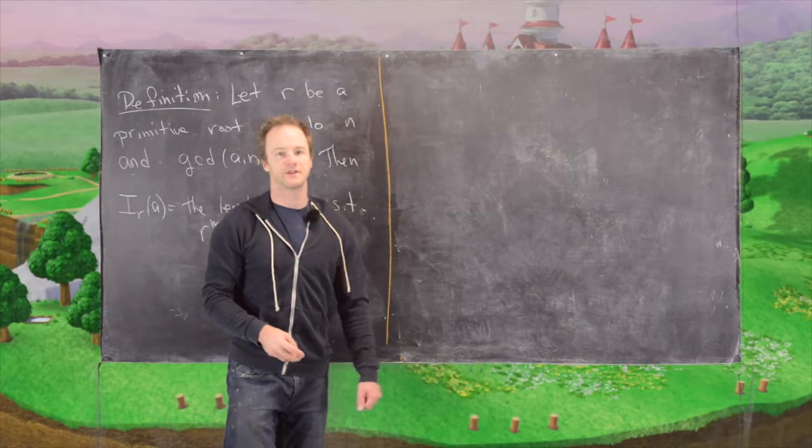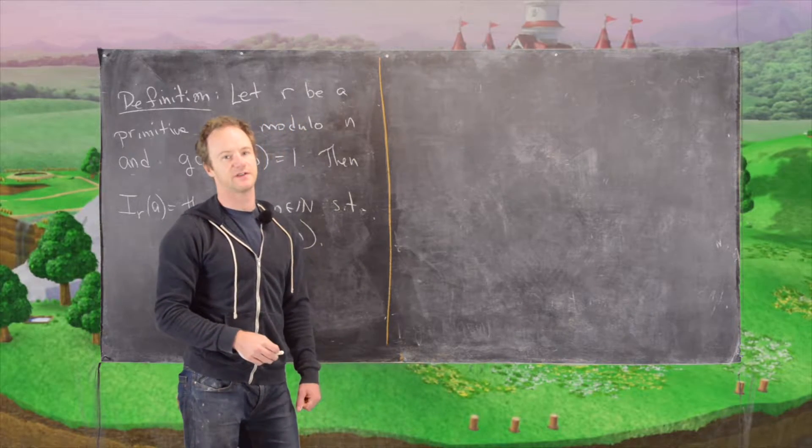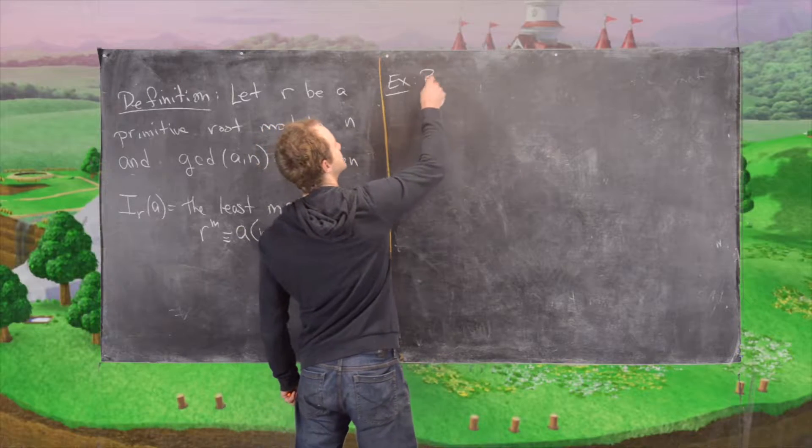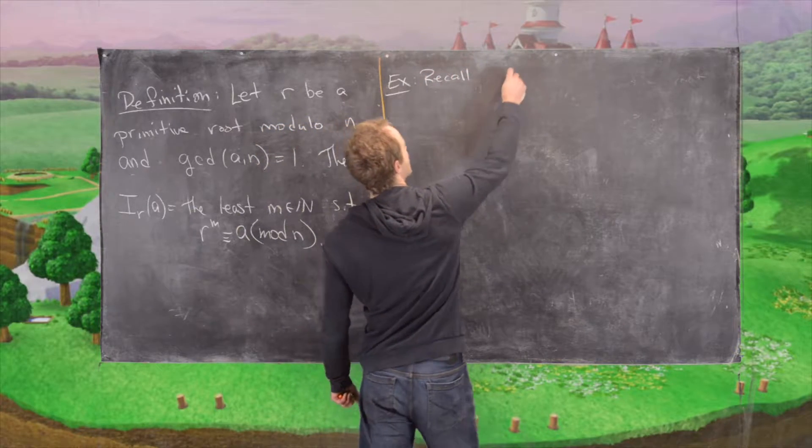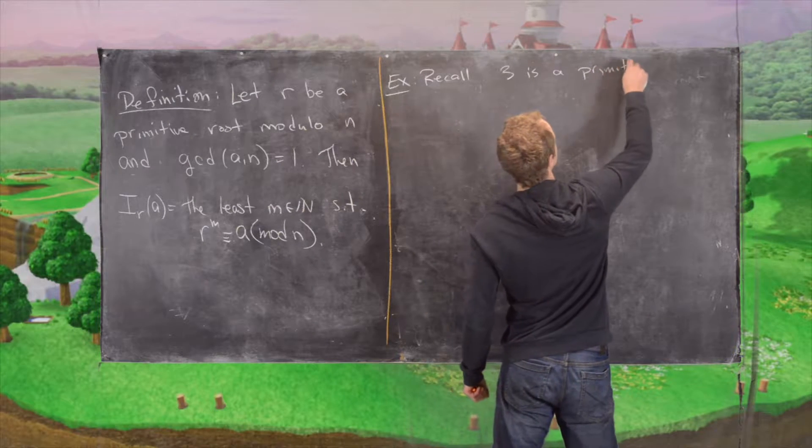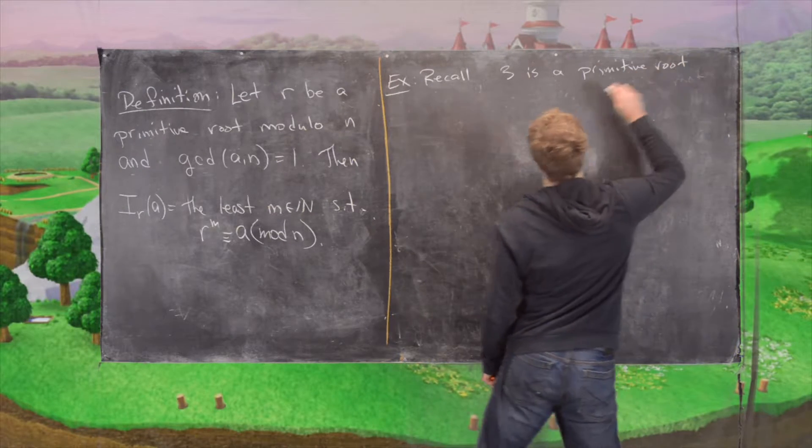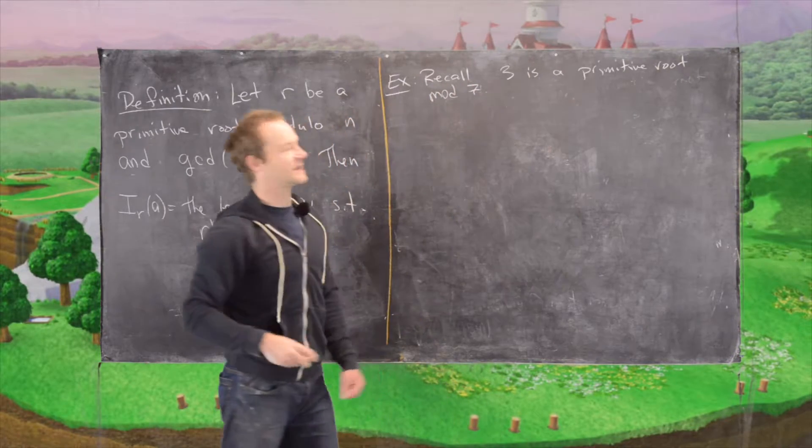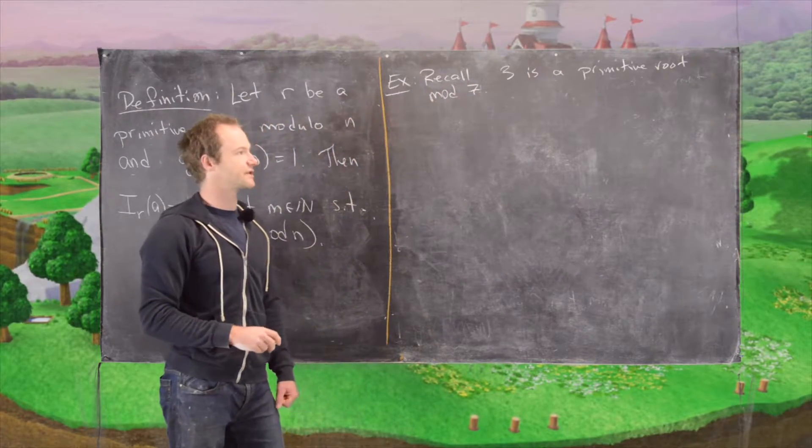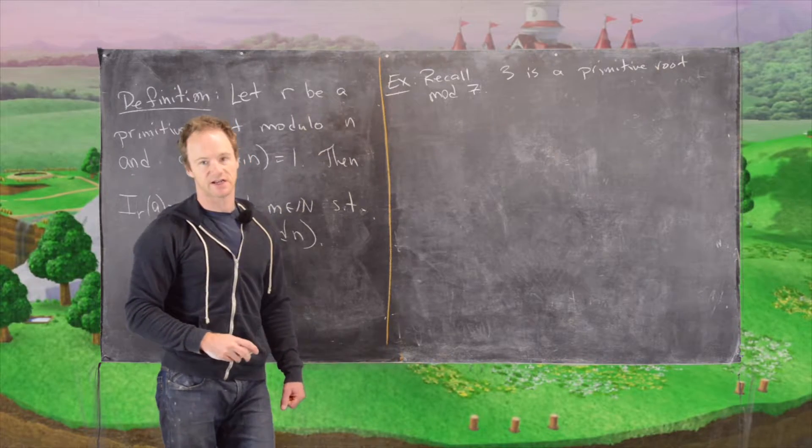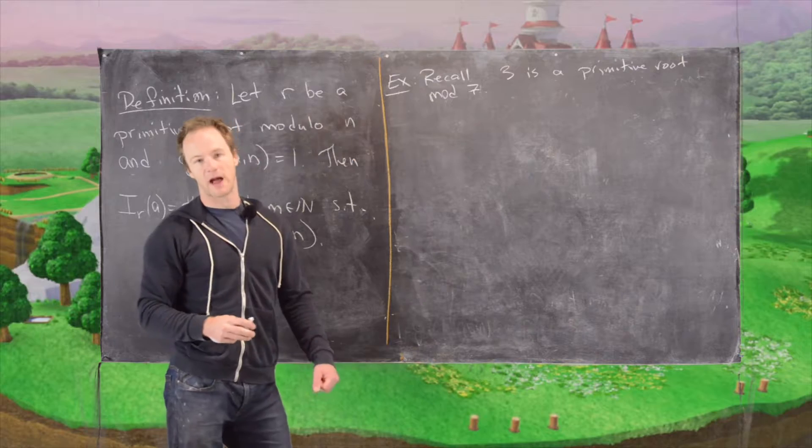Okay, so now we want to look at a basic example of this notion. So let's recall that 3 is a primitive root mod 7. So what that means is that the order of 3 modulo 7 is phi of 7 which is 6. So now let's calculate all powers of 3.